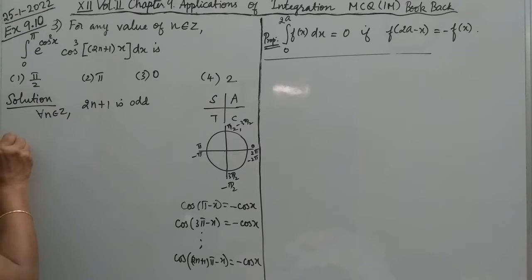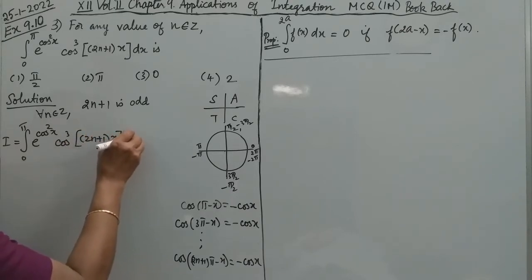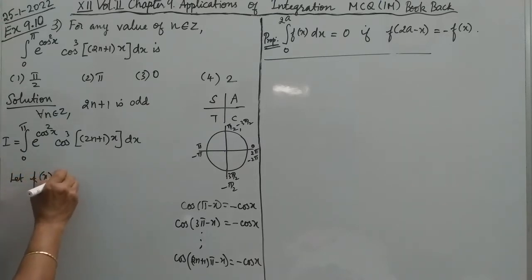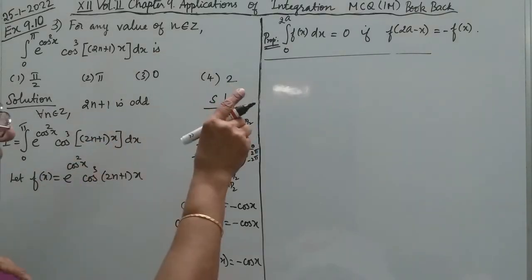The problem is I = integral from 0 to π of e^(cos²x) times cos³(2n+1)x dx. First we write the integrand. Let f(x) = e^(cos²x) times cos³(2n+1)x.